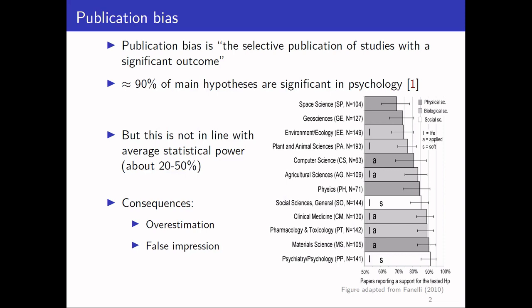This large percentage of support for the tested hypothesis on one hand, and the low statistical power on average of 20 to 50 percent on the other hand, are just not in line with each other. A possible reason for this discrepancy is publication bias.